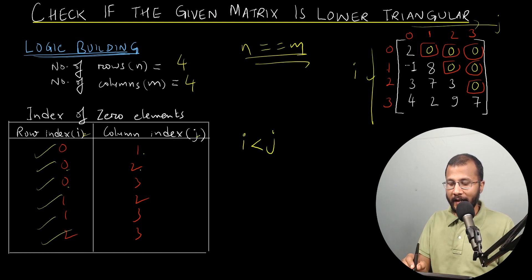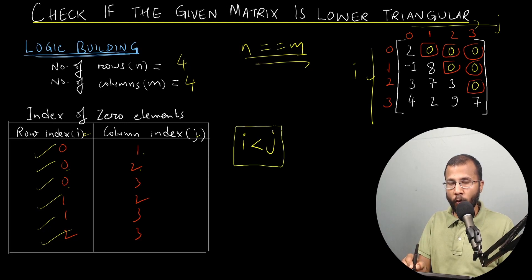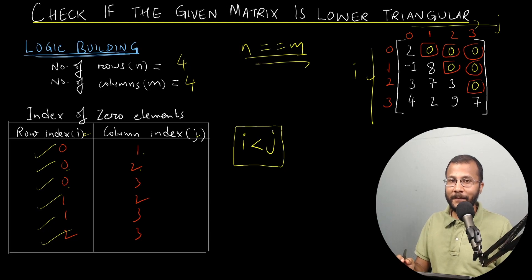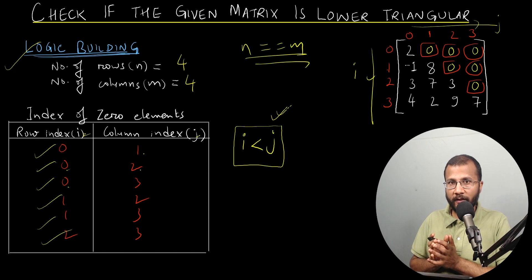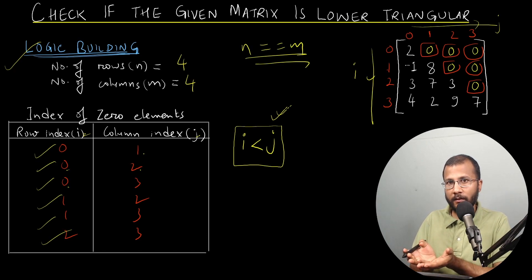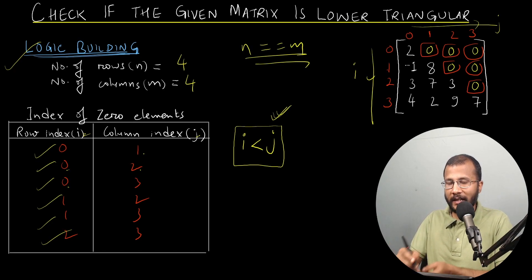So the logic is simple: whenever the row index i is less than the column index j, if all those elements are zero, then the matrix is a lower triangular matrix — provided it is also a square matrix. So the condition we check is: for all positions where i < j, the element must be zero. If it is zero it's lower triangular; otherwise it is not. Let's note down this logic and write a program to demonstrate the same.